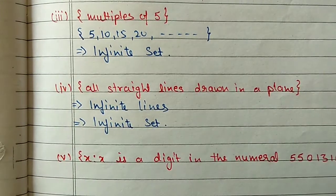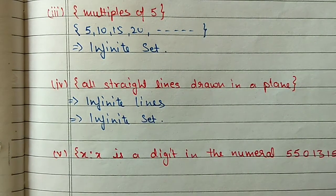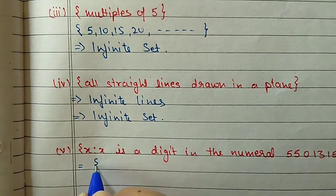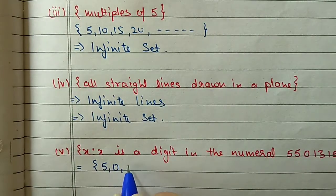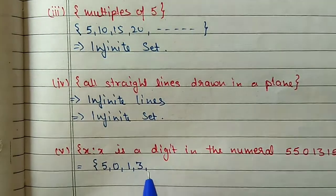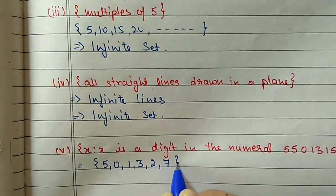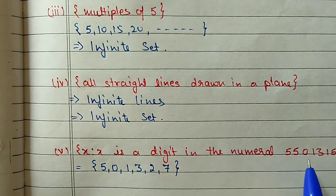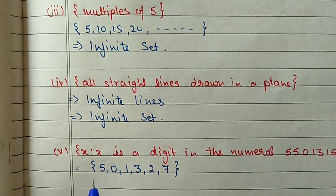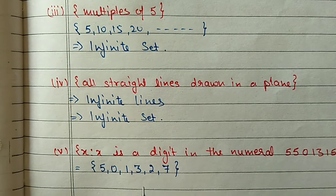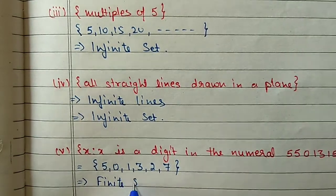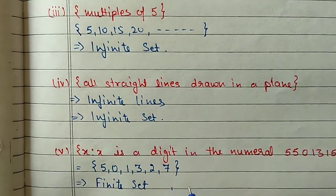Part (v): {x such that x is a digit in the numeral 550131527}. The digits used are 5, 0, 1, 3, 2, and 7. We do not repeat - 5 appears 3 times but we write it once, and 1 appears 2 times but we write it once. So the distinct digits are 6 in total. This is a finite set and the cardinal number is 6.